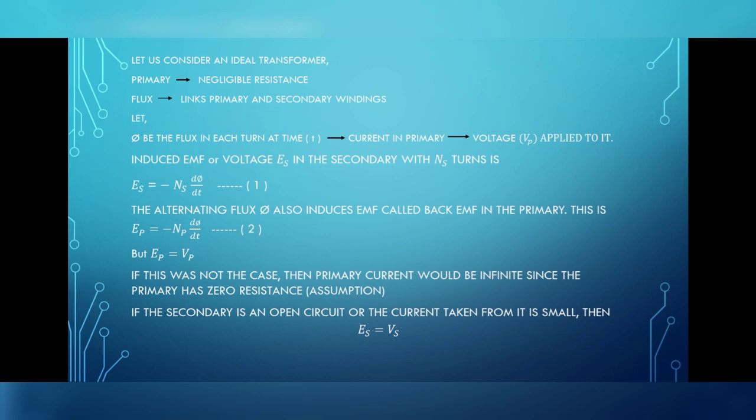Induced EMF or the voltage VES in the secondary with NS turns is given as ES equals minus NS dphi by dt. The alternating flux phi also induces an EMF called as back EMF in the primary. A back EMF is an EMF appearing in an inductive circuit in such a direction so as to oppose any change of current in the circuit. This EMF in the primary is given as EP equals minus NP dphi by dt. But we have the EMF in the primary is equal to the voltage in the primary, that is EP equals VP.